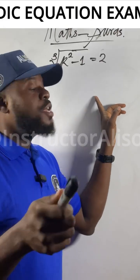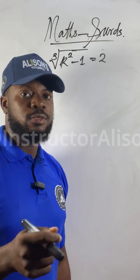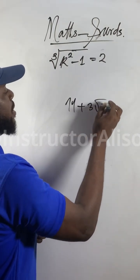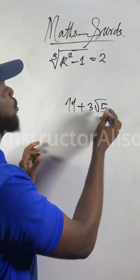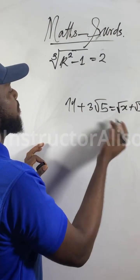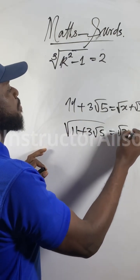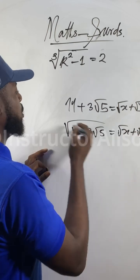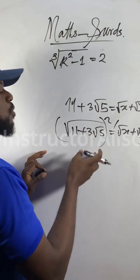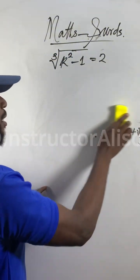Again, if you know the surd square root pathway, where if you get something like 11 plus 3 root 5, you need to solve this. You may need to equate it to x plus y, then finally get the square root of 11 plus 3 root 5. They teach you to square both sides, expand, and work on it.